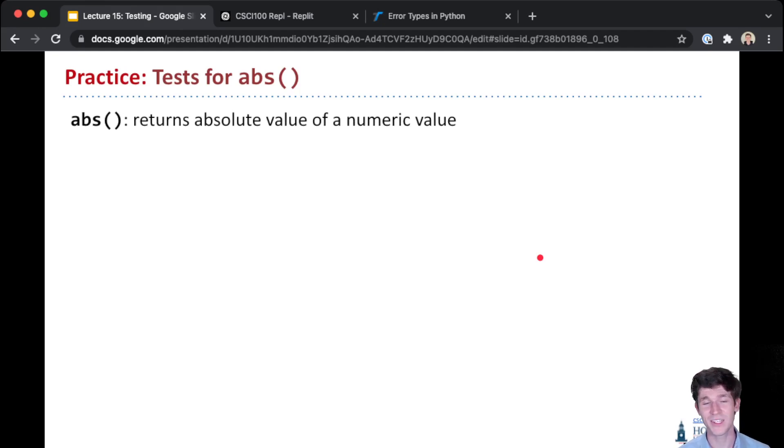So if we were in class, I'd cold call on you or ask people to raise their hands. But one case that we should definitely try is a positive number. So the number 10—the absolute value of 10 is 10. You'll notice we don't need to try any other positive values because probably if our code works for 10, it also works for 9, it also works for 11. It's very unlikely for us to have an error with just one positive number but not the other positive numbers.